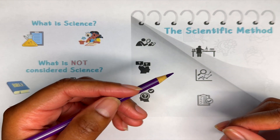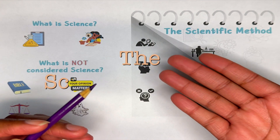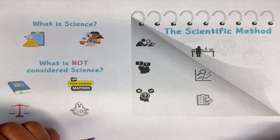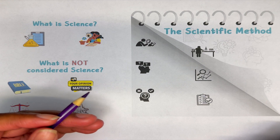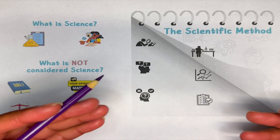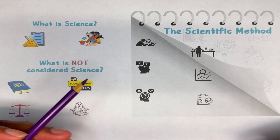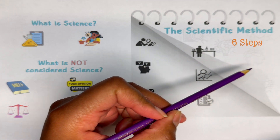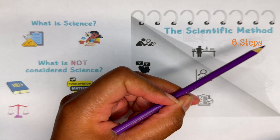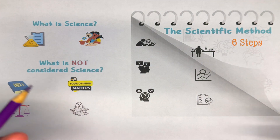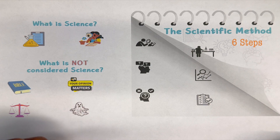Hey hey, so in today's lecture we are going to talk about the scientific method. The scientific method uses observations and tests to try and explain the natural world that we live in. It consists of six logical processes or steps, and this method is used by most scientists and biologists.